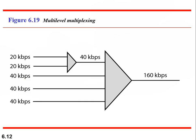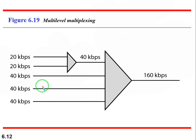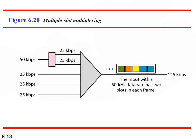Looking at the multi-level multiplexing figure: we have links at 40 kbps, 40 kbps, 40 kbps — these are the same, so no technique is needed. But we also have 20 kbps and 20 kbps links. We add both using a MUX, which brings them to 40 kbps. Then all low-rate channels — 40, 40, 40 — are combined to give 120 kbps through one high-rate channel. This is multi-level multiplexing.